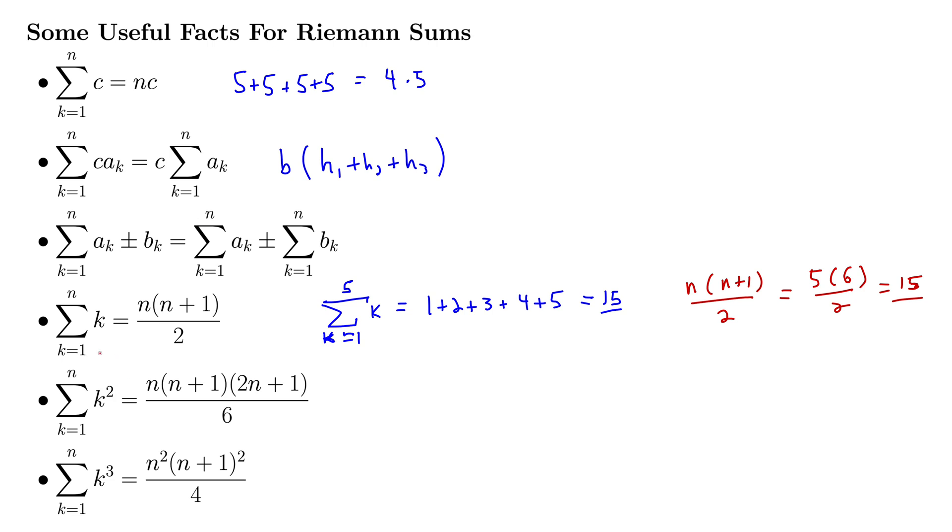Similarly, we have a formula for k squared, the sum of k squared, n times n plus 1 times 2n plus 1 all over 6. And similarly, we have a formula for k cubed, the sum from k equals 1 to n, and that gives us n squared times the quantity n plus 1 squared all over 4. And we'll do some examples with these two coming up here.